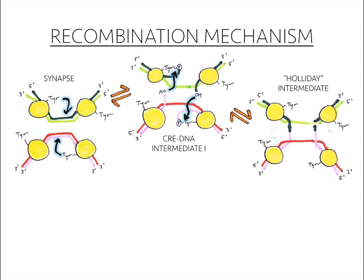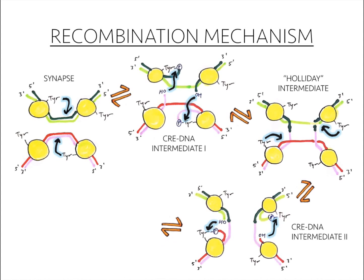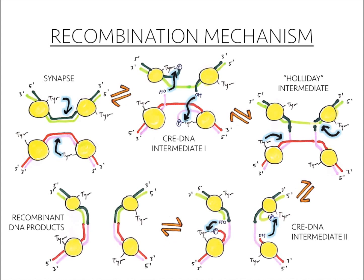Then the mechanism repeats: tyrosines attack phosphate groups on the DNA strands, the free hydroxyl groups attack the phosphates attached to the tyrosines, and finally the recombinant DNA products are formed.